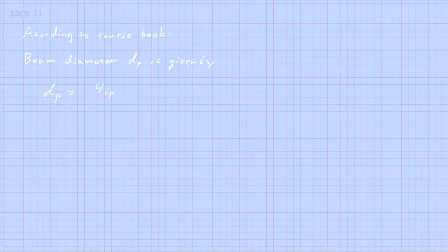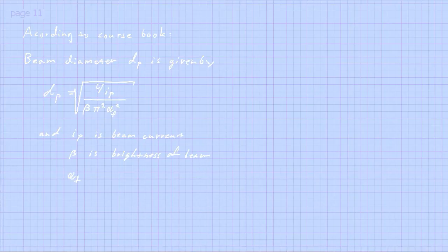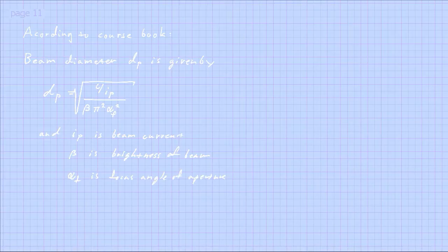Probe size and current of the beam. You can change the spot size of the beam in an electron microscope, and a few parameters affect this. In the course book you can see an equation that relates to this: the beam diameter dp is proportional to the square root of the beam current divided by the brightness beta of the source times pi squared and the aperture angle in focus squared.